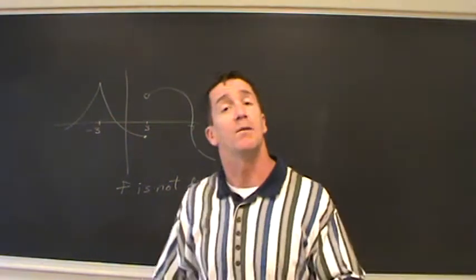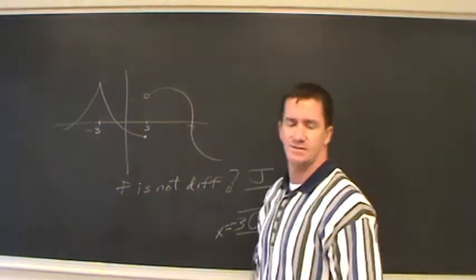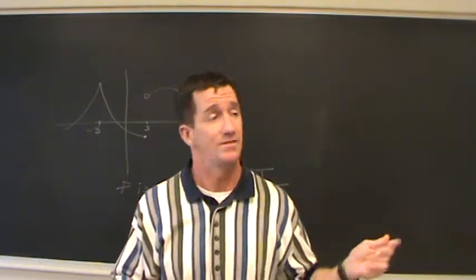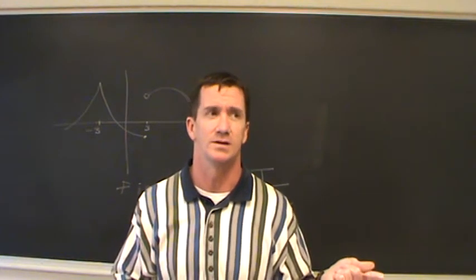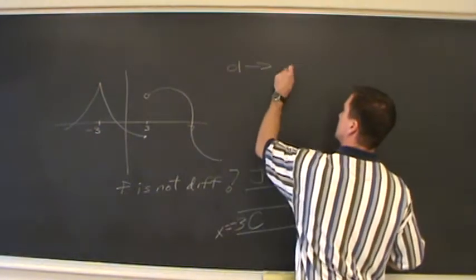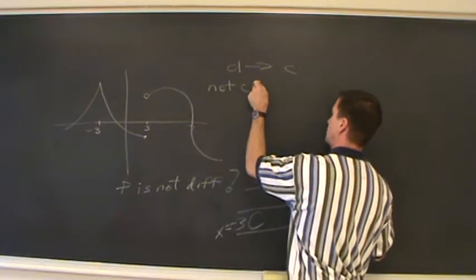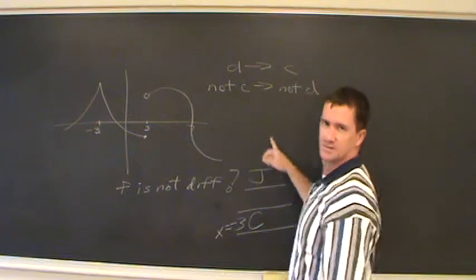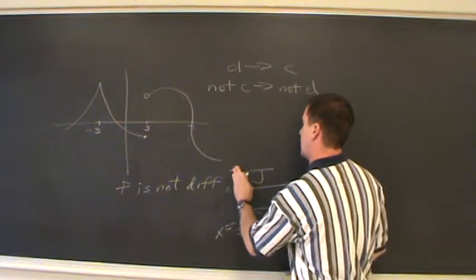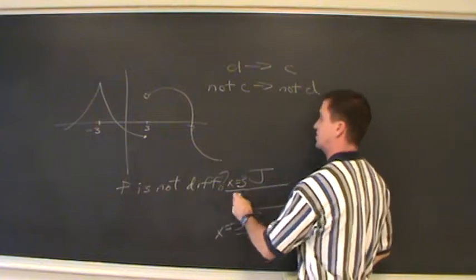At x equal to three, we have what's called a jump discontinuity. If a function is differentiable, then it's continuous at that point. But you can't take the converse of that statement — you can't say a function is continuous, then it's differentiable. If a function is not continuous at a point, it's not differentiable. Therefore, at x equal to three, we have a jump discontinuity, so this function is not differentiable there either. At x equal to negative three, it's not differentiable.